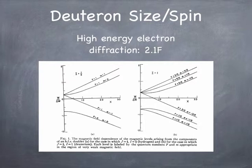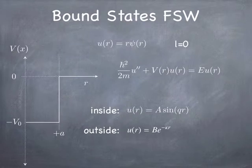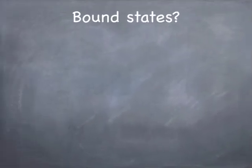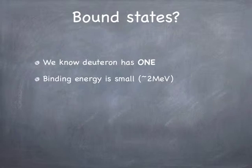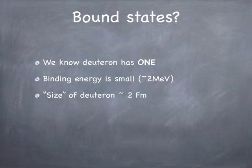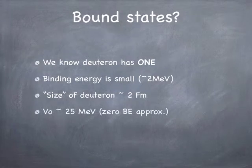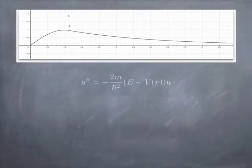That's very interesting. For the bound state, we're going to assume a square well potential — you could assume other shapes, but qualitatively the answers are the same. We know the deuteron has a bound state and the binding energy is only about 2 MeV. The size from the charge distribution is about 2 Fermi. If you assume no binding energy — that the thing is barely bound — you can estimate the depth of the well, and you get about 25 MeV. We know it's not barely bound since it does have a significant non-zero binding energy, but in any case you end up with a characteristic wave function.